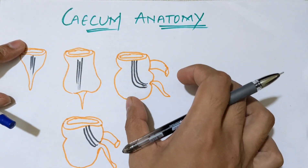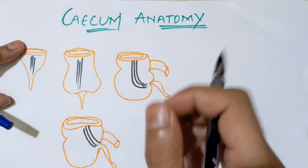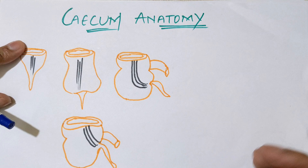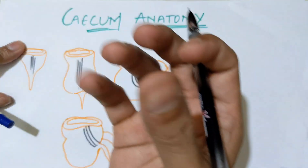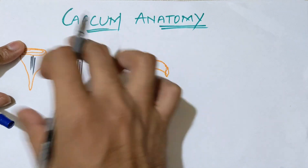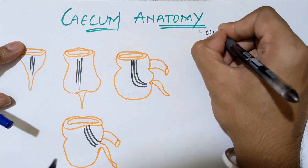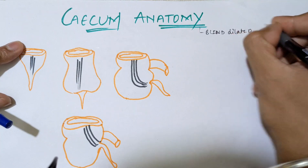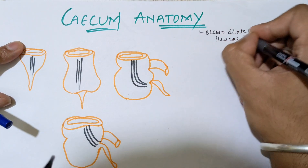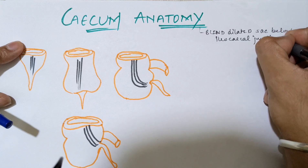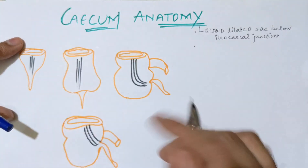The cecum is the proximal part, or the beginning, of the large intestine. It has a connection with the ileum (small intestine) at the ileocecal junction, from where the large intestine begins. Just below the ileocecal junction there is a blind, dilated sac called the cecum — the word 'cecum' literally means blind sac. It lies in the right iliac fossa.